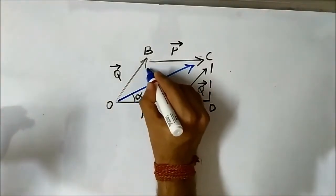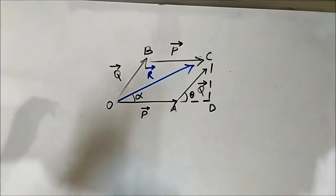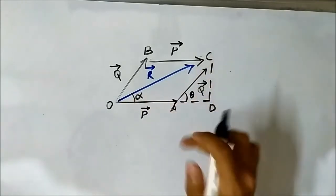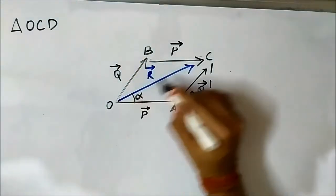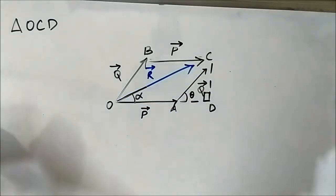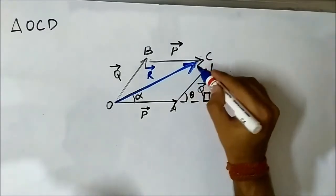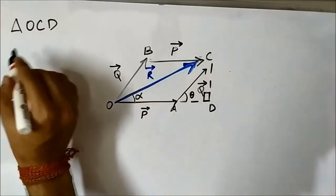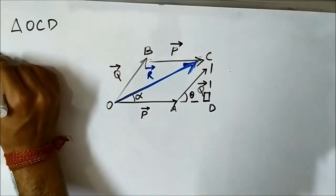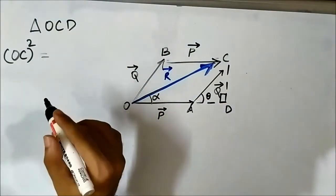This is the resultant vector. If we consider triangle OCD, it will be a right-angle triangle because this angle is 90 degrees. Since triangle OCD is a right-angle triangle, we can apply the Pythagorean theorem — the same technique as we did in the triangle law of vector addition. So OC² (the hypotenuse squared) equals OD² plus CD².